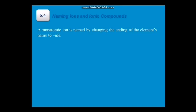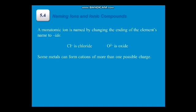We have here the monoatomic ion. From the word itself, mono means one. Monoatomic is named by changing the ending of the element's name to -ide. We have some examples: chloride and oxide. Chloride from the element chlorine and oxide from the element oxygen.